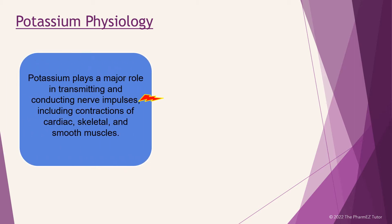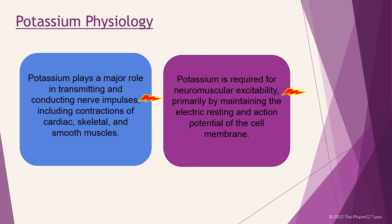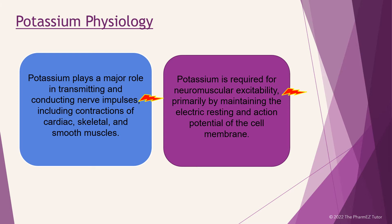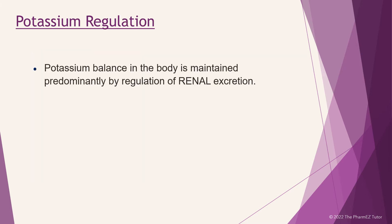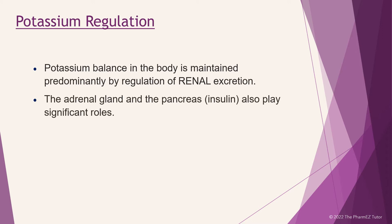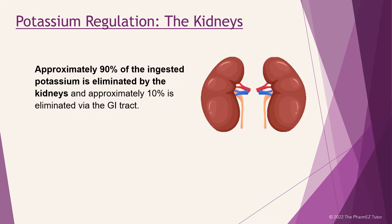Let's go over some of the physiology of potassium. Potassium plays a major role in transmitting and conducting nerve impulses, including contractions of cardiac, skeletal, and smooth muscles. Potassium is required for neuromuscular excitability, primarily by maintaining the electric resting and action potential of the cell membrane. Potassium balance in the body is maintained predominantly by regulation of renal excretion. The adrenal gland and the pancreas, including insulin, also play significant roles. Approximately 90% of ingested potassium is eliminated by the kidneys and approximately 10% via the GI tract.